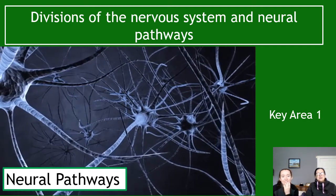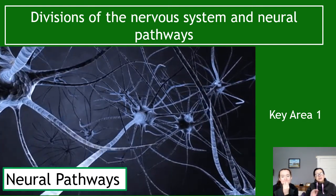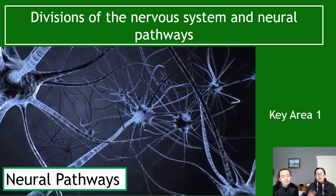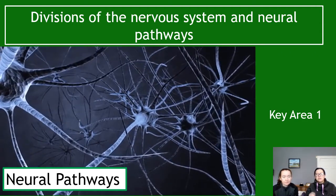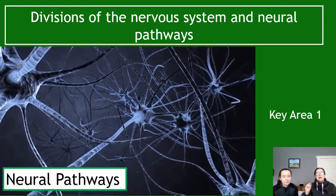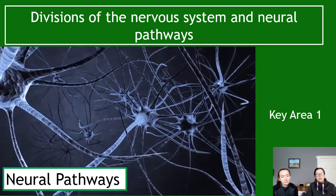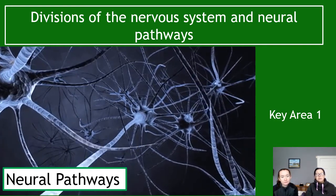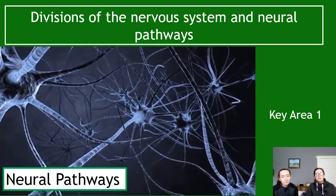Hello! We're into section two of key area one — this will be the last of key area one, quite a short one compared to a lot of the course. This section is on neural pathways, covering the movement of signals through neurons.